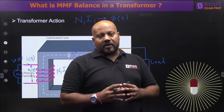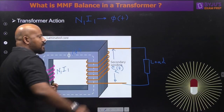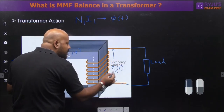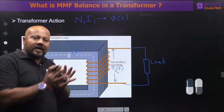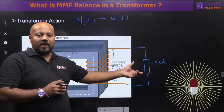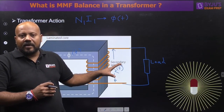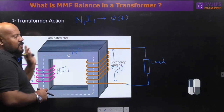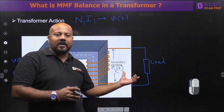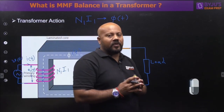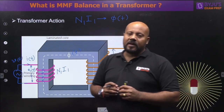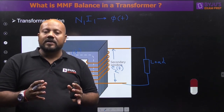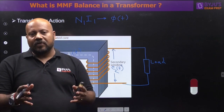Transformer action is what happens when you close the switch at the secondary side and connect a load. That load has no direct source, so how is power being delivered to it? The source connected at the primary side supplies power to the load at the secondary side — that is transformer action. To understand this, let us divide our discussion into two parts: transformer at no load, and transformer at some load.